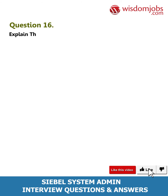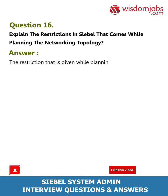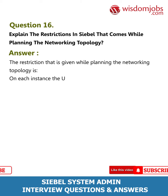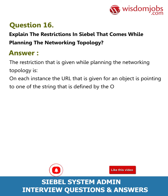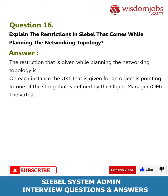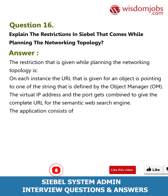Question 16: Explain the restrictions in Siebel that come while planning the networking topology. Answer: The restriction given while planning the networking topology is that on each instance, the URL given for an object is pointing to one of the strings defined by the object manager. The virtual IP address and the port get combined to give the complete URL for the semantic web search engine.